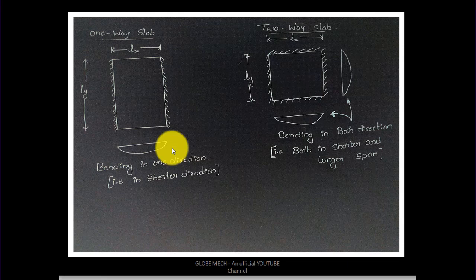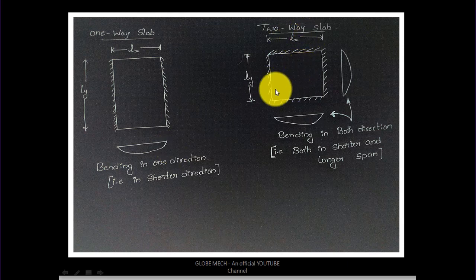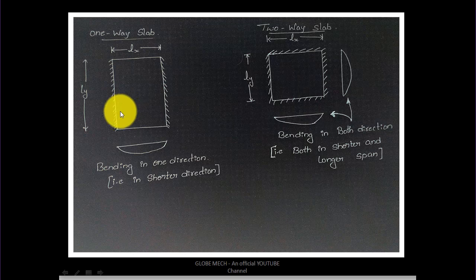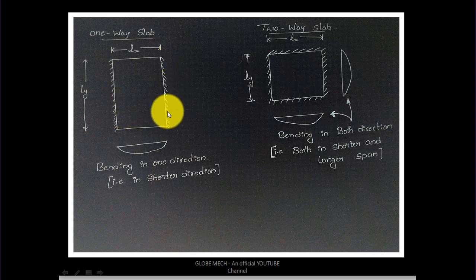When it comes to reinforcement in a two-way slab, we provide main reinforcement along both the shorter span direction and the longer span direction. In a one-way slab, main reinforcement is provided only along the shorter direction, and along the longer direction we usually provide distribution bars.